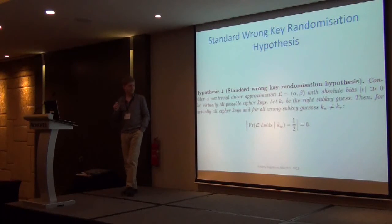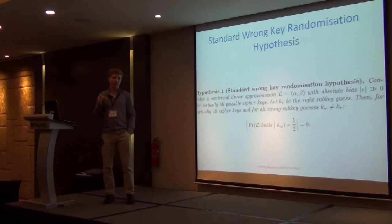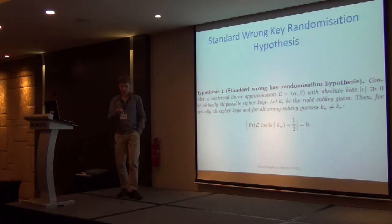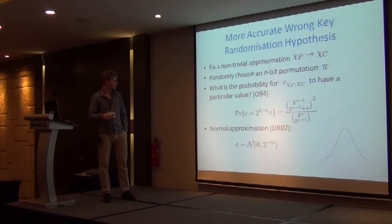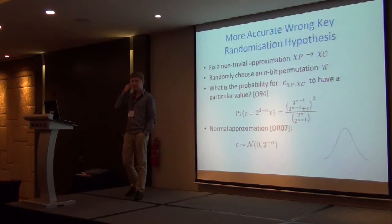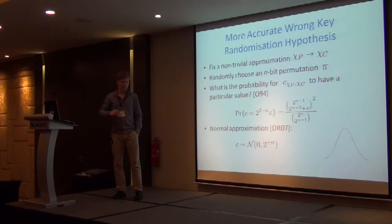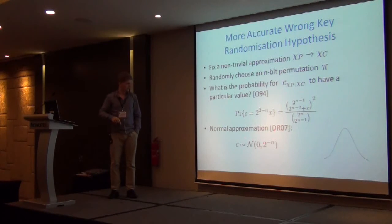Wrong key randomization hypothesis, which basically says that whatever the value is for the wrong key, the linear approximation is unbiased. And of course, we know from Baigneres-Vaudenay results by O'Connor that this is not true. And actually, over the wrong keys, the bias is normally distributed with mean zero value and some non-zero variance, which is fairly small. So we'll see what effect we have on our complexities.